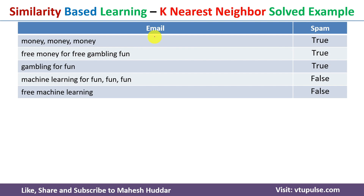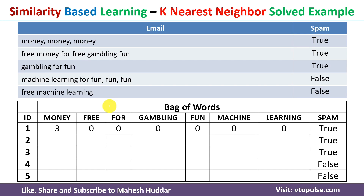Before applying any algorithm, we need to convert the data into a Bag of Words representation, because the given data is in textual form and we cannot apply algorithms directly on text. So first we convert the textual data into numerical data — that is the Bag of Words. To do this, we first identify all unique words in the dataset.